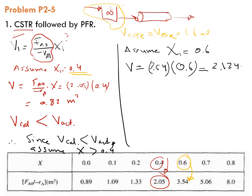Now we have V_calculated is more than V_actual. In fact, this conversion is way larger than what would be achieved because this conversion, 0.6, requires this much volume, but I don't have this much volume. I have only 1.6.